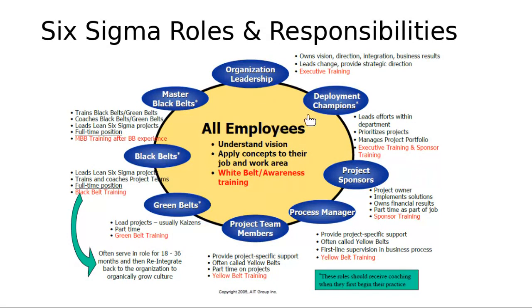Then the deployment champions — they lead the efforts within the department and prioritize projects. Six Sigma projects can be very large and contain different sub-projects, each targeting a certain process in the organization. The champion is the one who prioritizes which project starts first and manages the project portfolio. He needs executive training as well as sponsor training.